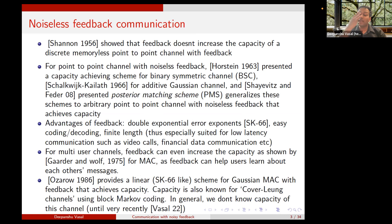One question is: if we have feedback in the communication, how can we do better? In 1956, Shannon showed a negative result — feedback does not increase the capacity of a discrete memoryless point-to-point channel. For the point-to-point channel with noiseless feedback, Horstein in 1963 presented a capacity-achieving scheme for the binary symmetric channel, Shalkiu Kallat in 1966 gave a scheme for the Gaussian channel, and Shayevits and Feder generalized both into the posterior matching scheme, which achieves capacity for any point-to-point channel with noiseless feedback.